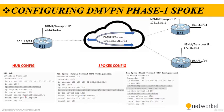Let's talk about the spoke configuration now. The configuration on the spokes is similar to the hub, except that it does not use a multipoint GRE tunnel — instead, the tunnel destination is specified. That is the first difference. The second difference is that the NHRP mapping setting points to at least one active NHS. We can check the spoke configuration here. Interface tunnel 100 is the same as the hub, and we are setting the same bandwidth.